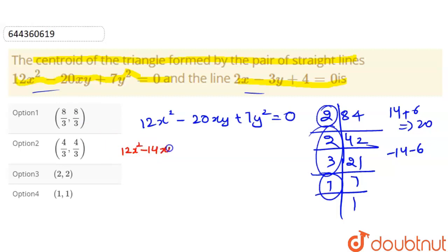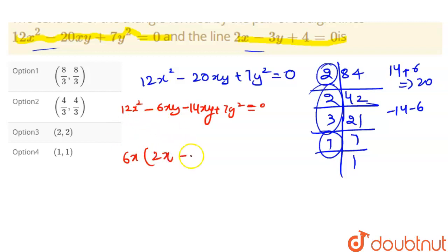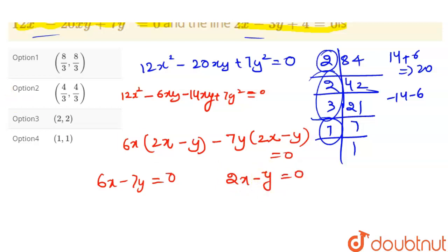This gives us 12x² − 14xy − 6xy + 7y² = 0. Taking common factors: 2x(6x − 7y) − y(6x − 7y) = 0, giving us (6x − 7y)(2x − y) = 0. So the two lines are 6x − 7y = 0 and 2x − y = 0.